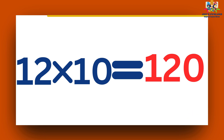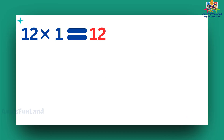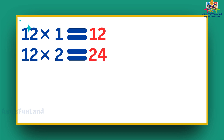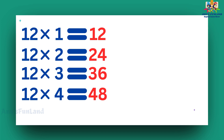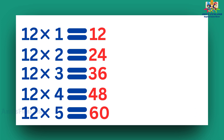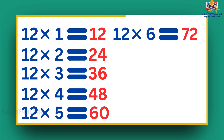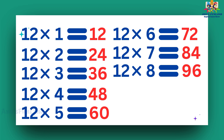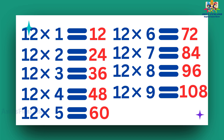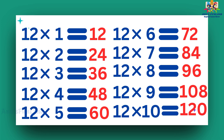12 tens are 120. 12 ones are 12. 12 twos are 24. 12 threes are 36. 12 fours are 48. 12 fives are 60. 12 sixes are 72. 12 eights are 96. 12 nines are 108. 12 tens are 120.